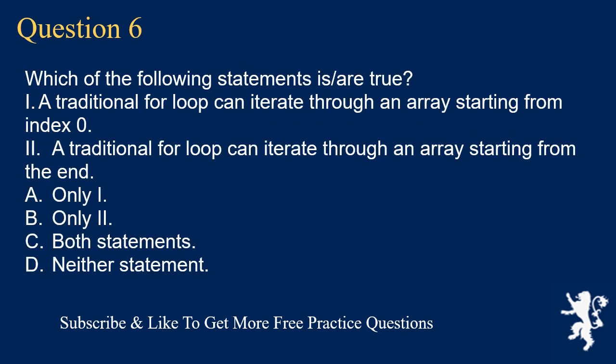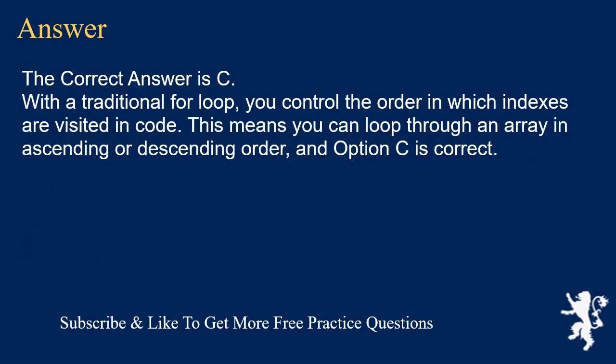Question 6. Which of the following statements is/are true? I. A traditional for loop can iterate through an array starting from index 0. II. A traditional for loop can iterate through an array starting from the end. A. Only I. B. Only II. C. Both statements. D. Neither statement. The correct answer is C. With a traditional for loop, you control the order in which indexes are visited in code. This means you can loop through an array in ascending or descending order, and option C is correct.